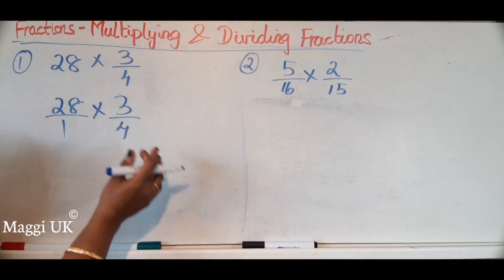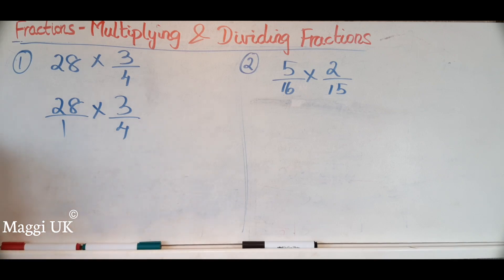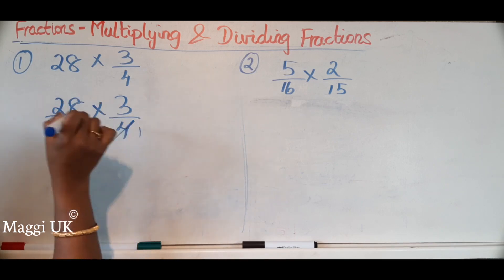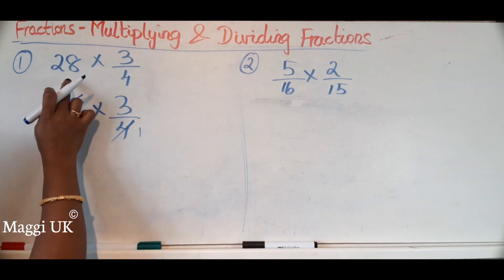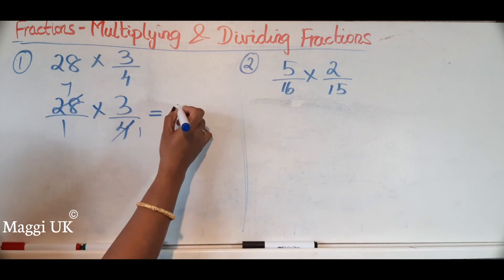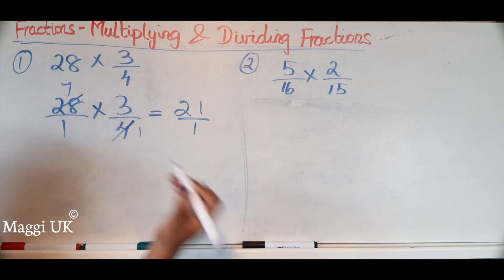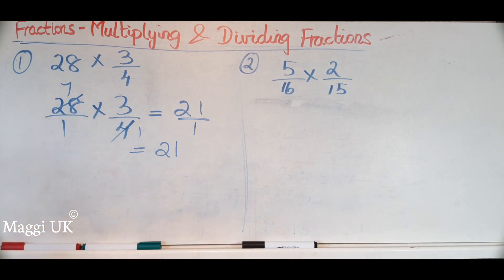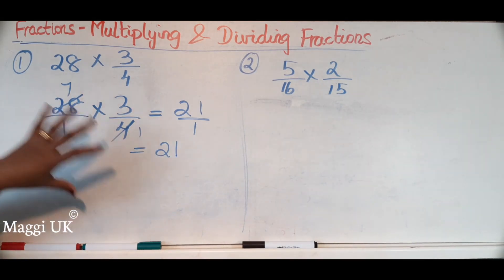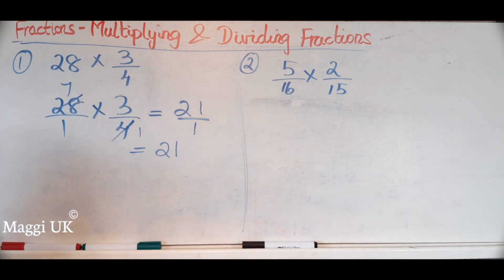You can see here you have 28 and 4 — how many times does 4 go into 28? Seven times. So now you don't have a bigger number to multiply; you just have 7 times 3, which is 21. And 1 times 1 is just 1 on the bottom, so the answer is simply 21. Strike out what you can, then multiply — it makes things much easier.